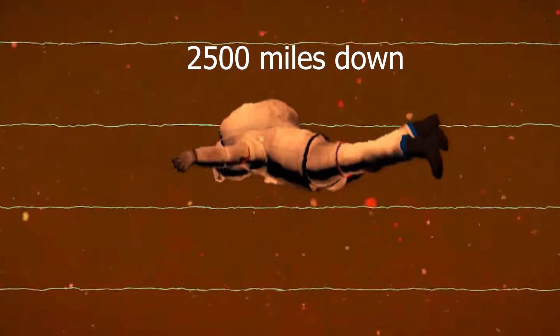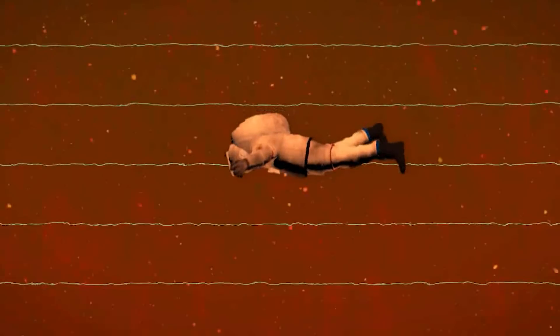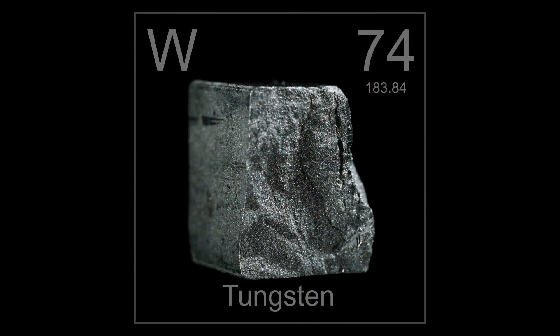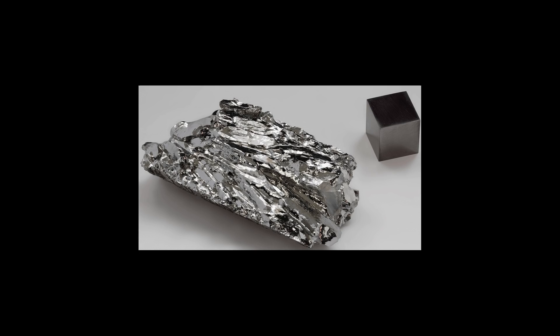At 2500 miles down, the temperature will reach 6100 degree Fahrenheit which is hot enough to melt the metal with highest melting point in the universe, Tungsten. At that point, just half of Earth day will be passed.